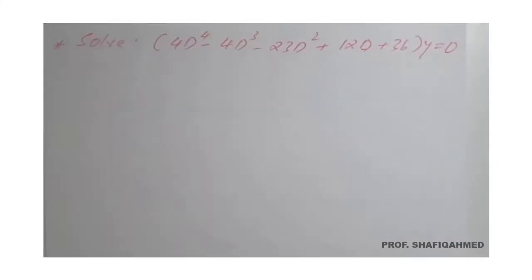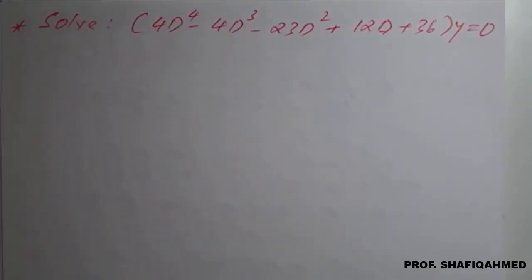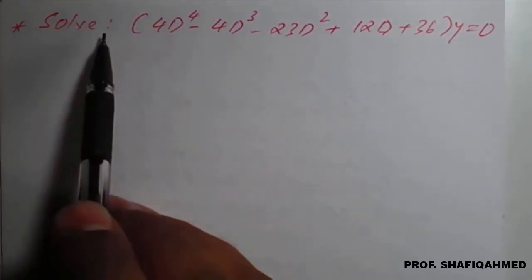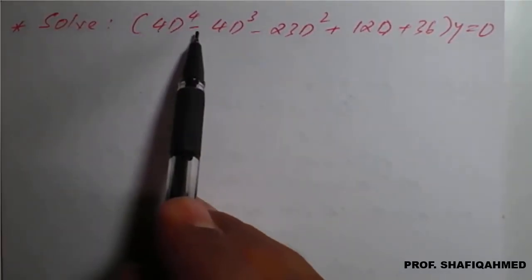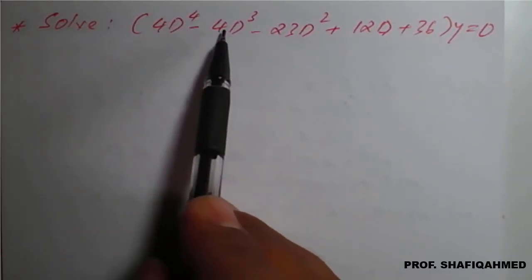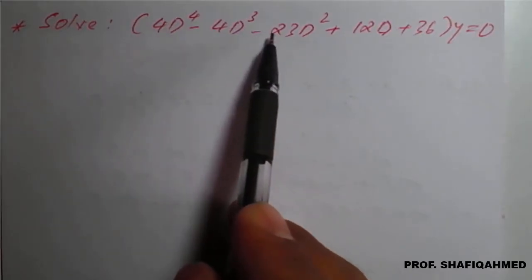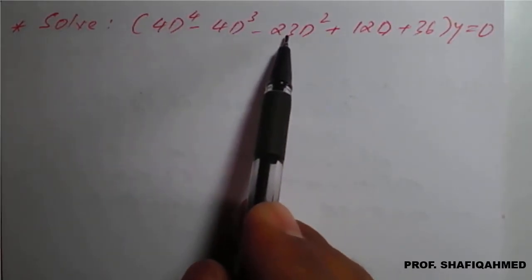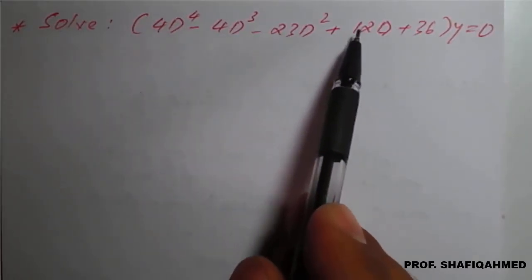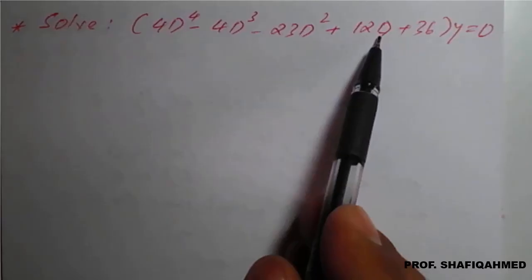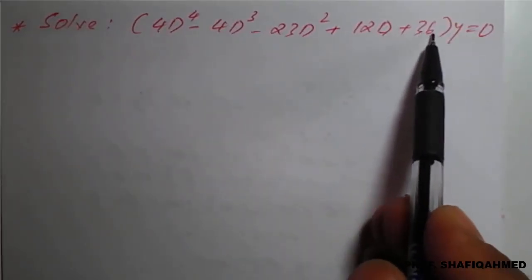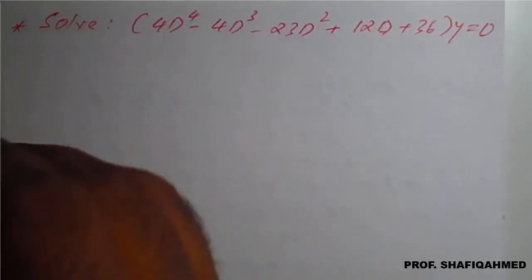Hello, everyone. In this lecture, we will see a problem on homogeneous differential equation. The problem is: 4D raised to 4 minus 4D cubed minus 23D squared plus 12D plus 36 of y equals 0.